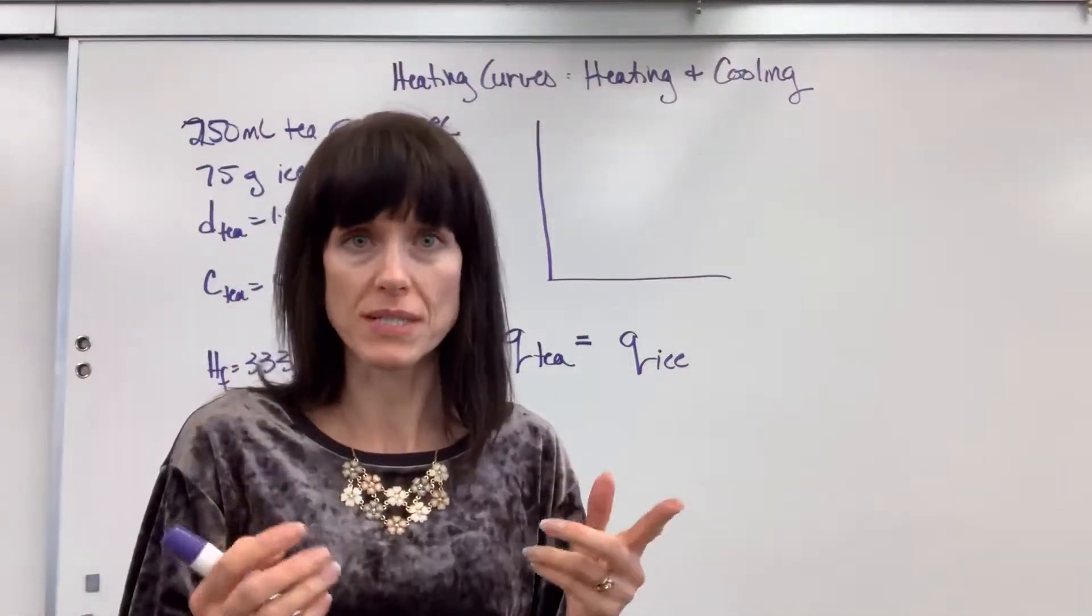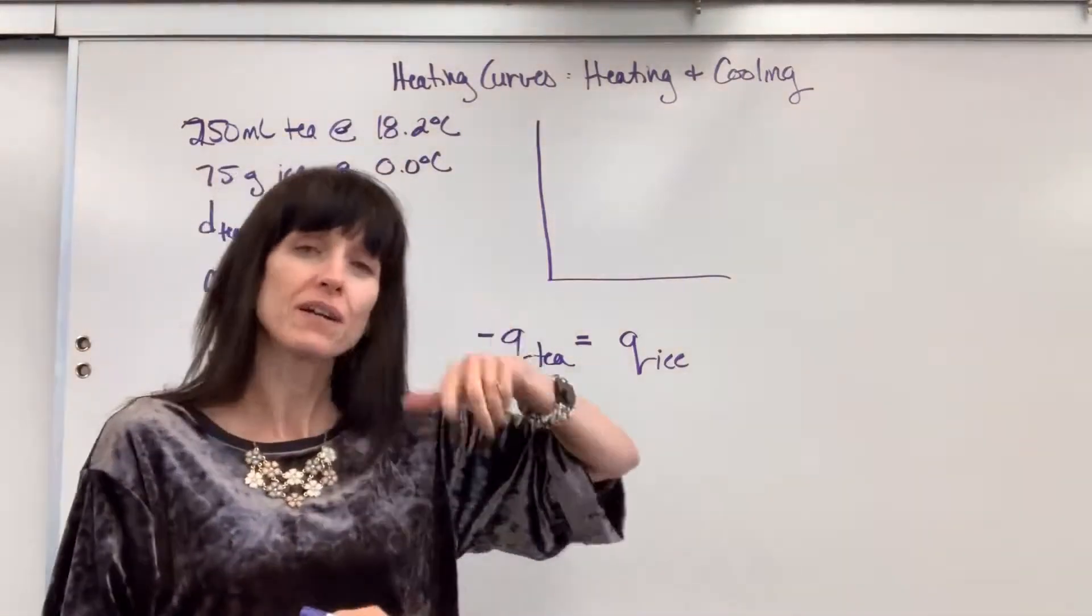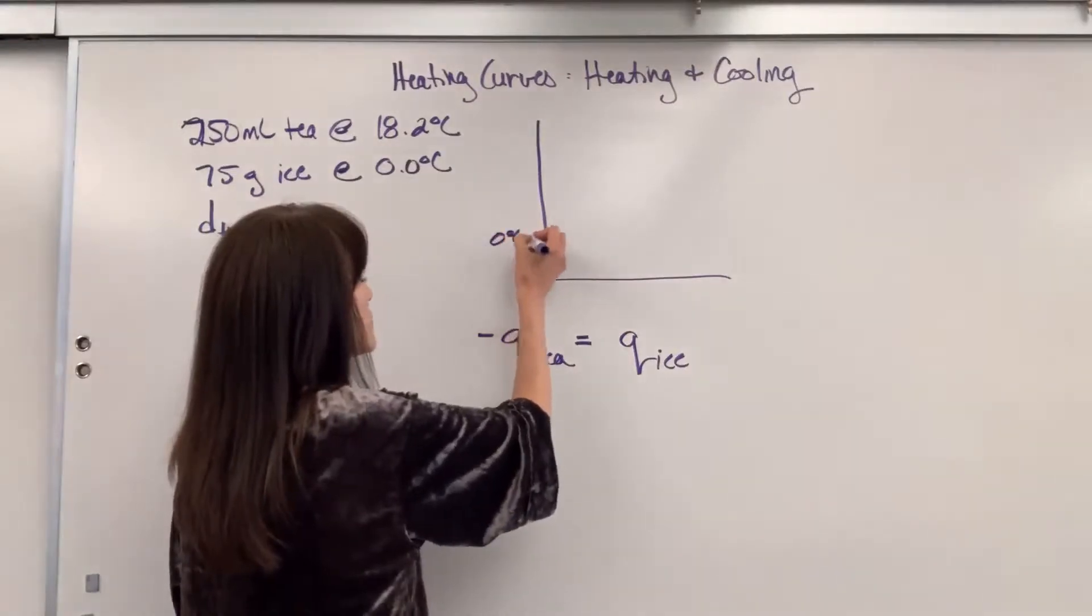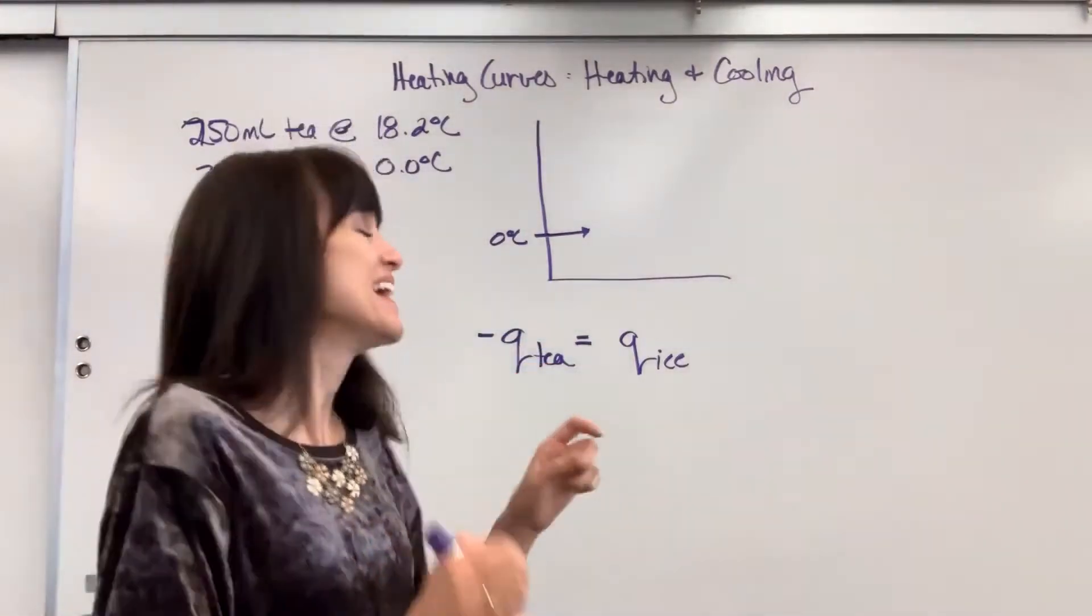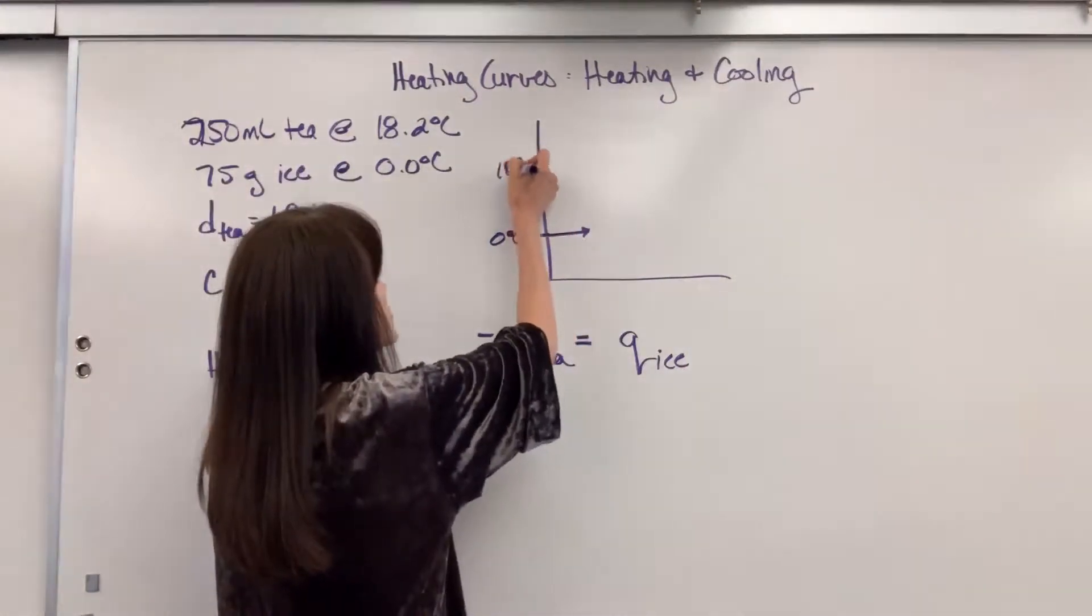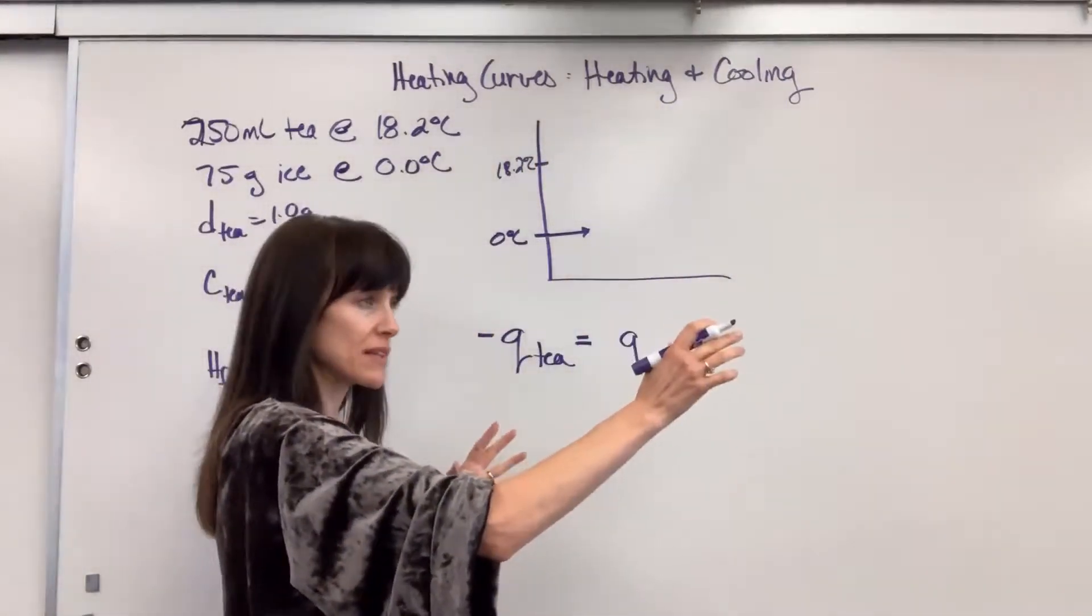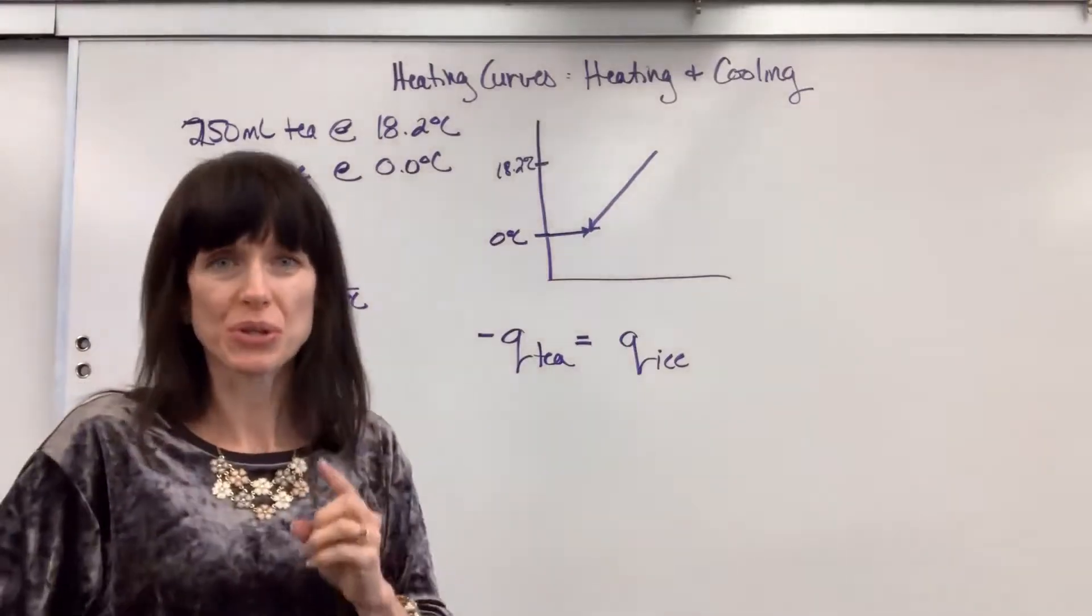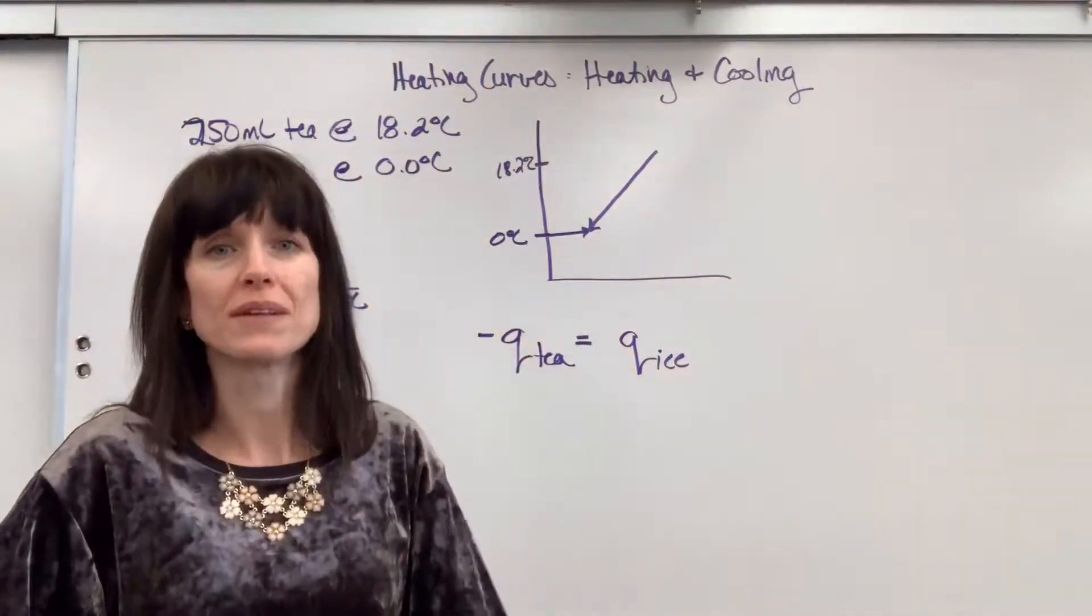Now second thing that I do is I draw our heating curve. Part of it's warming up, part of it's cooling down. So the part that's warming up, the ice, we start at zero degrees C, and it is only going to melt, and I put an arrow to remind myself the direction that this is melting. And then I have tea, and the tea is at 18.2 degrees C, and it's going to cool down. So it's a liquid, not changing phase, still going to be in the liquid phase, but we're going to cool it down to zero degrees C. So this is cooling down.